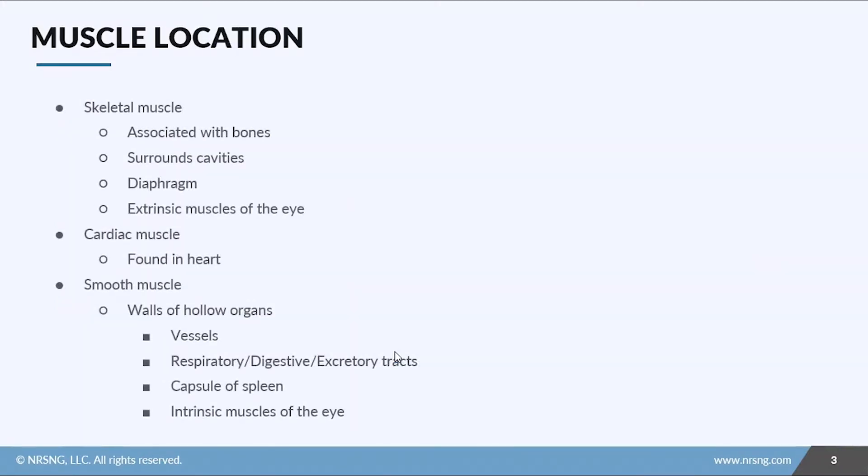So where are all these muscles located? Skeletal muscle is associated with bones, like the biceps and triceps. It also surrounds cavities, like your abdominal muscles. Then you've got your diaphragm, which helps us to breathe, and the extrinsic muscles of the eye. That allows for eye movement to the right or left and up and down, allowing us to look around without moving our head.